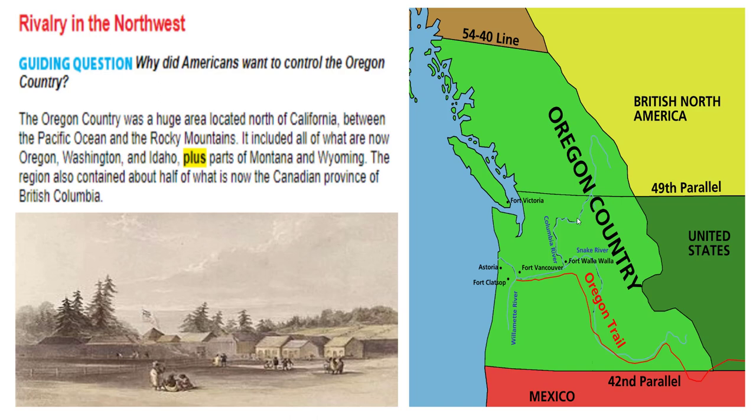Question number one: what area was considered the Oregon Country back in that time? It's basically the area north of California between the Pacific Ocean and the Rocky Mountains, and it included what we now call Oregon, Washington, Idaho, plus parts of Montana, Wyoming, and the British Columbia province of Canada.